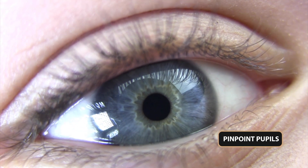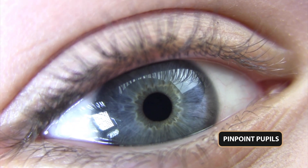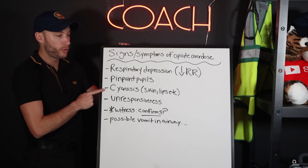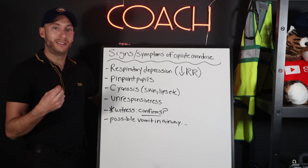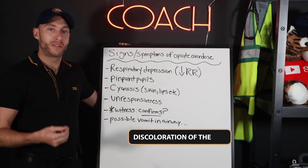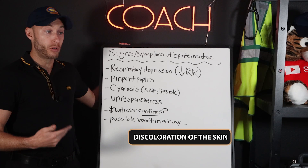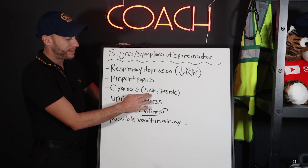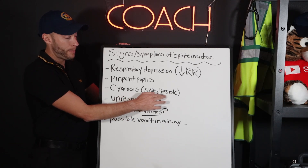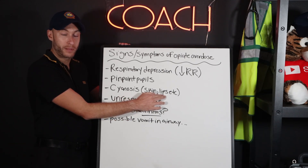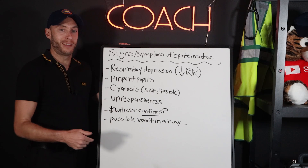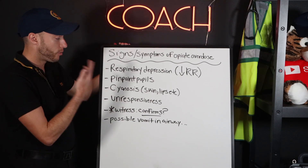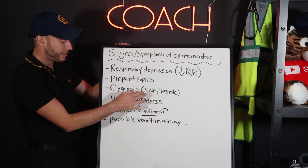Pinpoint pupils bilaterally — on both sides. Cyanosis is discoloration of the skin, blueing of the skin. It can happen in the skin, it can happen around the lips, the nail beds — but really look around the lips, for example, and you'll see it in the skin.